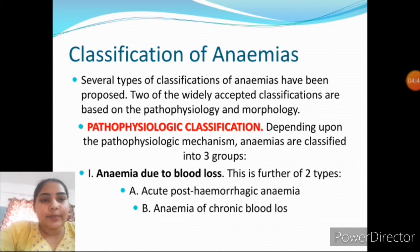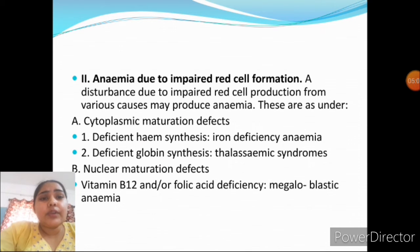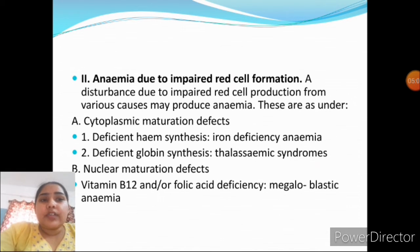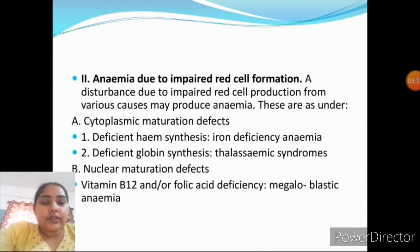Anemia due to blood loss is further divided into two types: acute post-hemorrhagic anemia and anemia due to chronic blood loss. Anemia due to impaired red cell formation has various causes. Cytoplasmic maturation defects include deficiency of iron synthesis causing iron deficiency anemia, and deficiency of globin synthesis causing thalassemic syndromes.